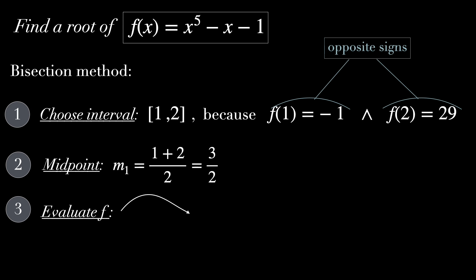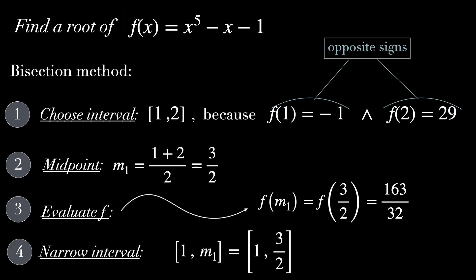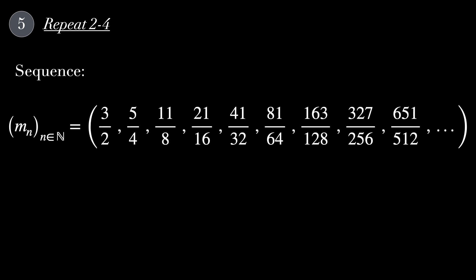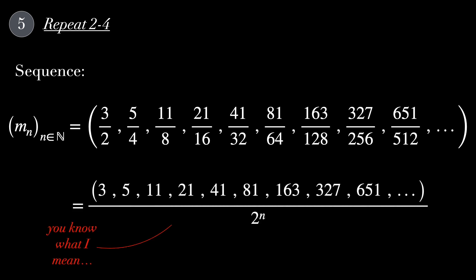Then we evaluate f at the point m1, and we get 163 over 32. Then we narrow the interval. Our new interval is going to be 1, 3 halves. Then we repeat the process over and over again, and we're going to get this sequence of numbers. Now look at this attentively. Try to find any pattern here. Well, one of the things I can see is that the denominator of each one of these elements is just 2 to the power of n, where n is a natural number corresponding to the step of this iteration. Now, I don't think that this is a correct notation, but you guys understand what I mean.